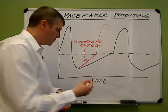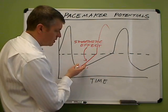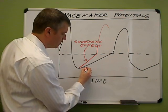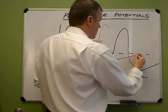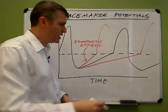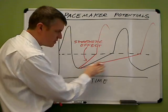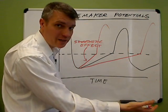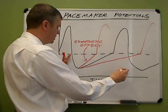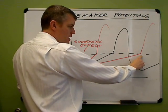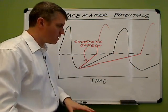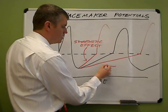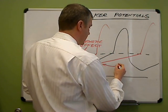Let's look at parasympathetic effect. Again, the slope of the line is going to determine the heart rate. If we decrease the slope of this line, then we're going to approach threshold less quickly — it's going to take more time to reach threshold, more distance between heartbeats, and a decrease in the cardiac rate. So this shallower slope represents parasympathetic effect.